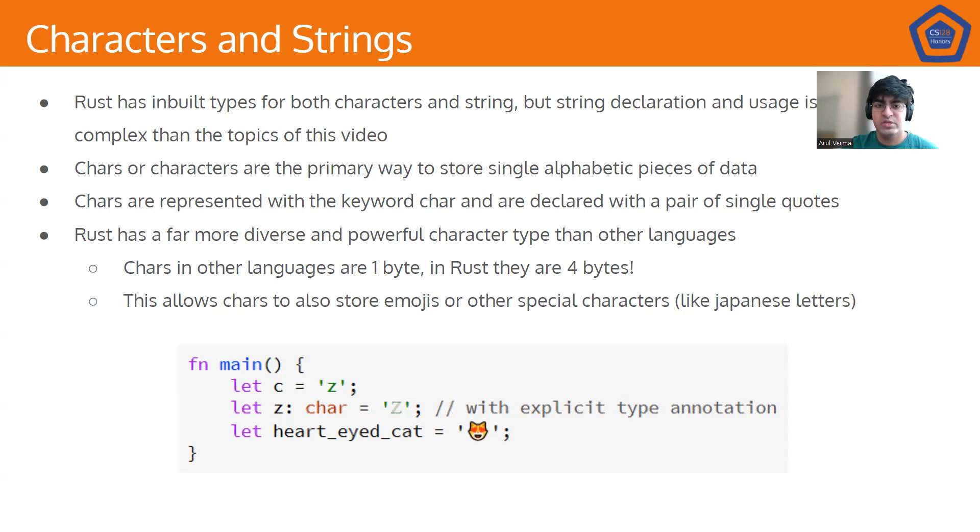In other languages, characters are single bytes. In other words, they have very limited range of what they can store. But in Rust, characters are four bytes, which means we get significantly more type expression in our characters. So, we can store emojis and special characters like Japanese letters. As you can see here, we have let c equals z, let z with an explicit type annotation equal to an italicized z. And then we can have a let heart-eyed cat, and we just put an emoji in there.